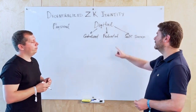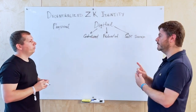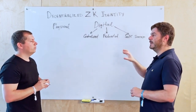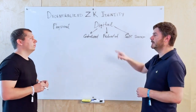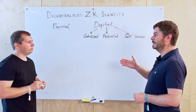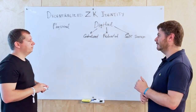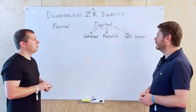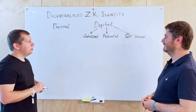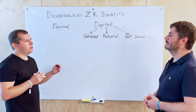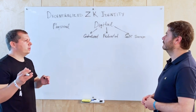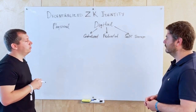With federated identity, the issuer stores data on its servers and tracks where you're using it. Also, the identity provider could just stop servicing you — if you forget your password or get blocked from a platform, you lose access. So to go back to privacy: with federated identity the issuer can see everywhere you use it, and if Facebook blocks you, you're blocked from all other services that rely on it. Data is also not easily portable between different identity providers.